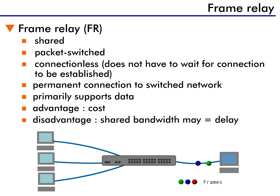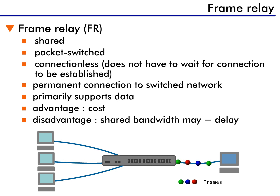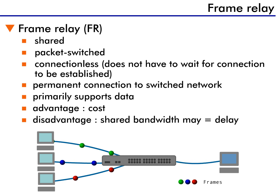If an organization has a high volume of critical communication between sites, Leased Lines might be the best way to go. If there is a low volume of communication that occurs at irregular intervals, dial-up ISDN may be the appropriate WAN technology to use. And finally, if there are many sites frequently exchanging data information, then Frame Relay may be the best choice.